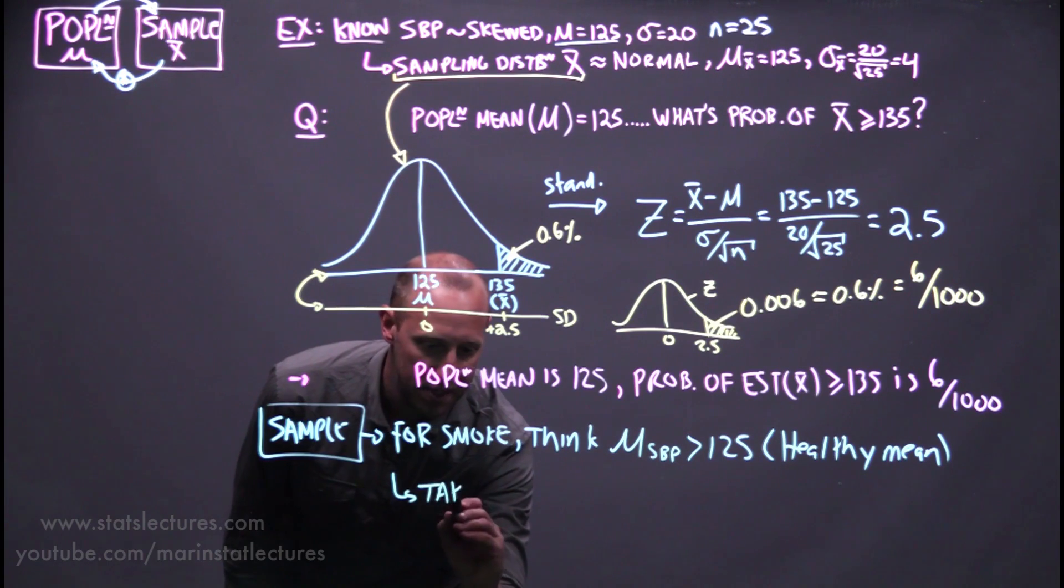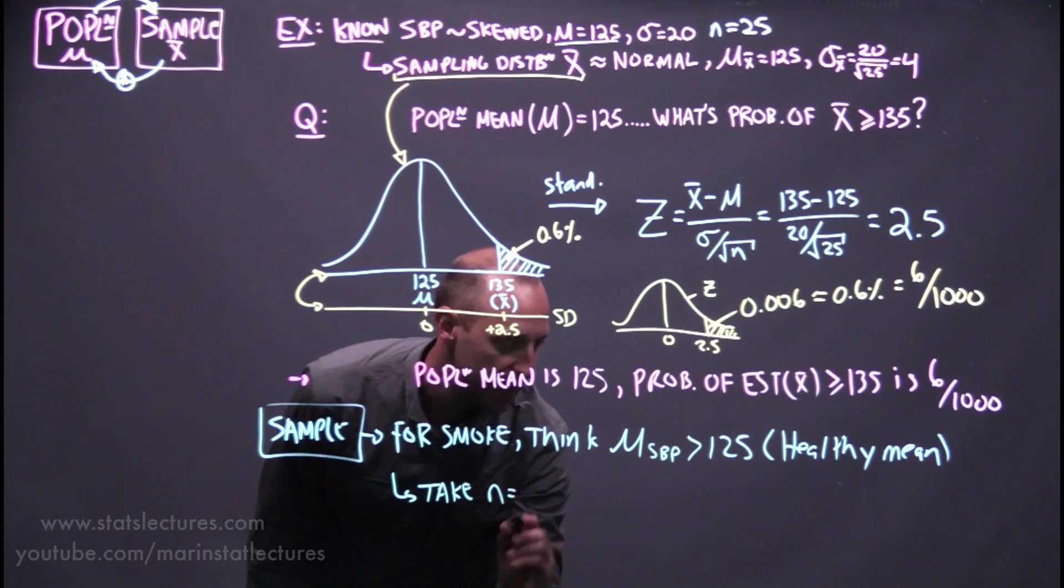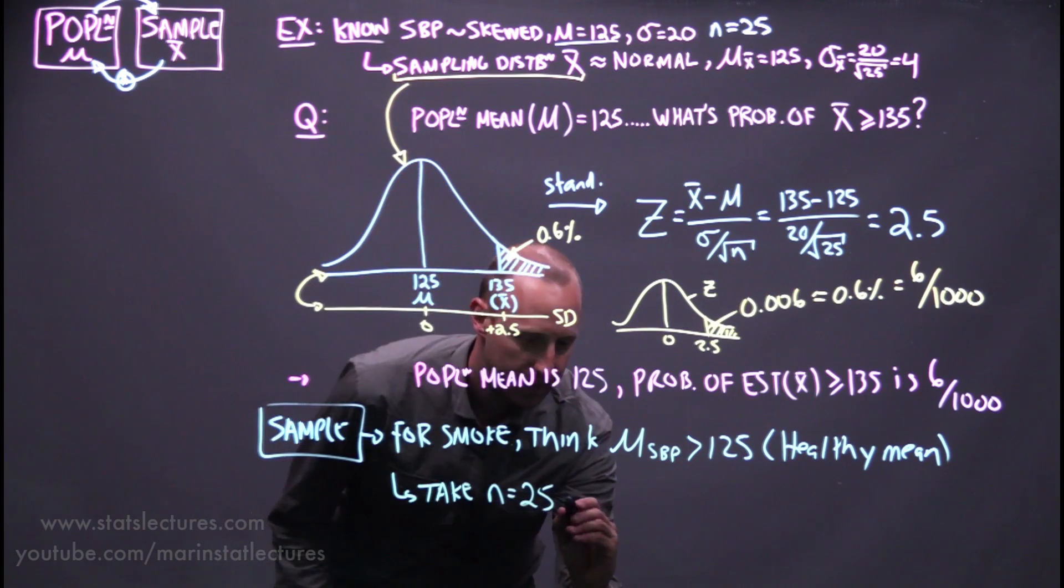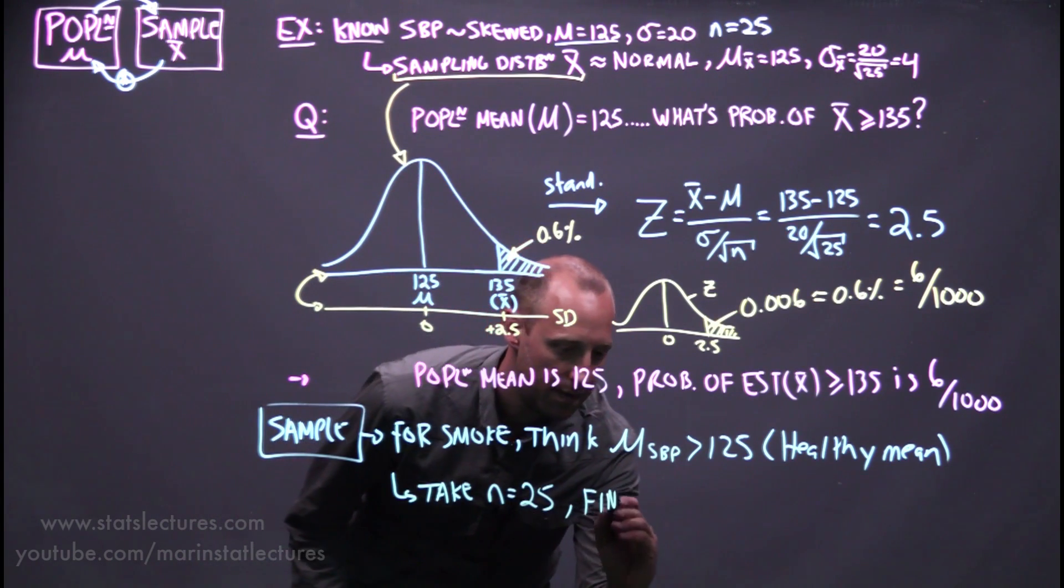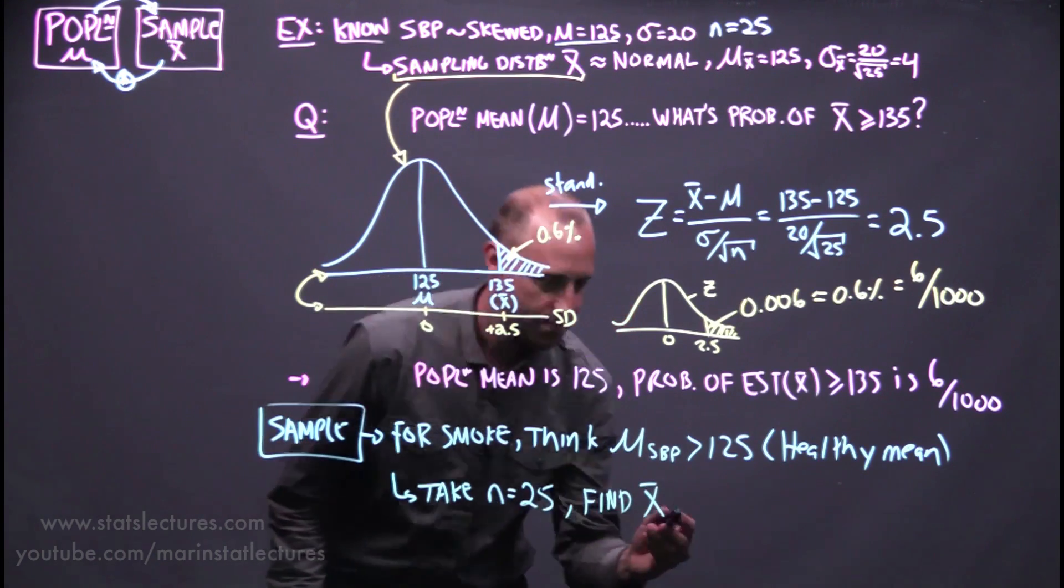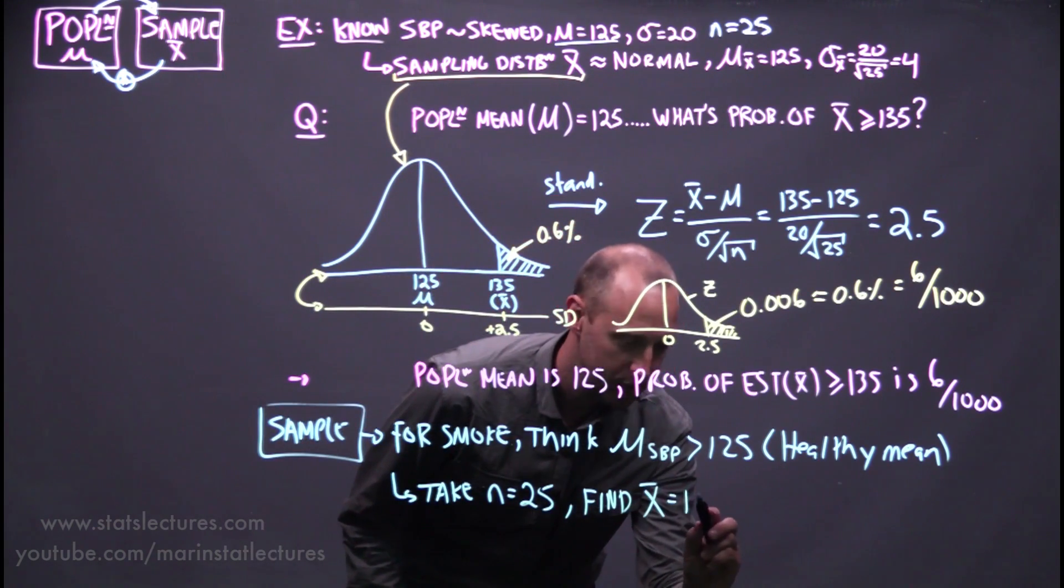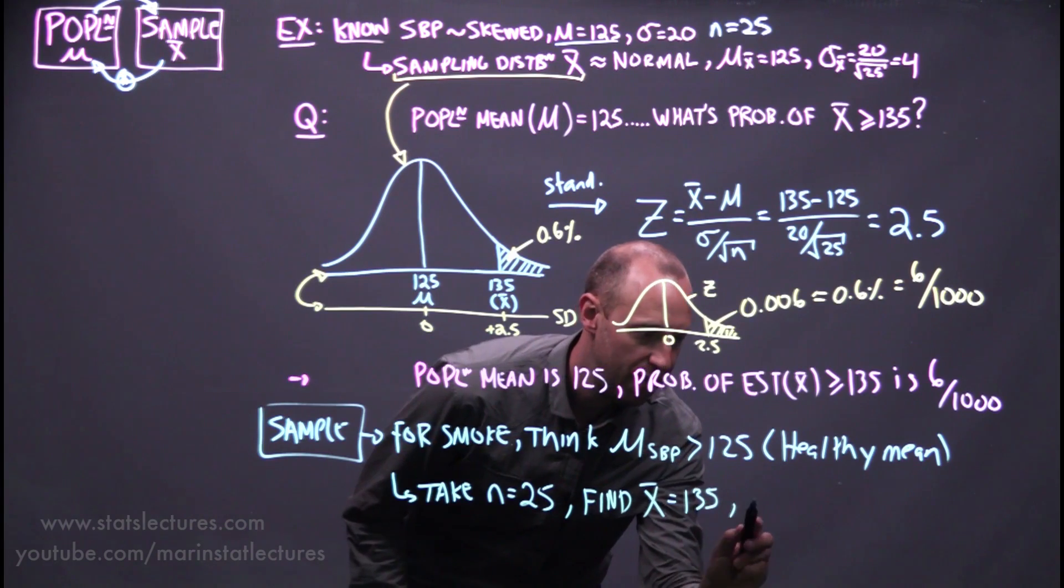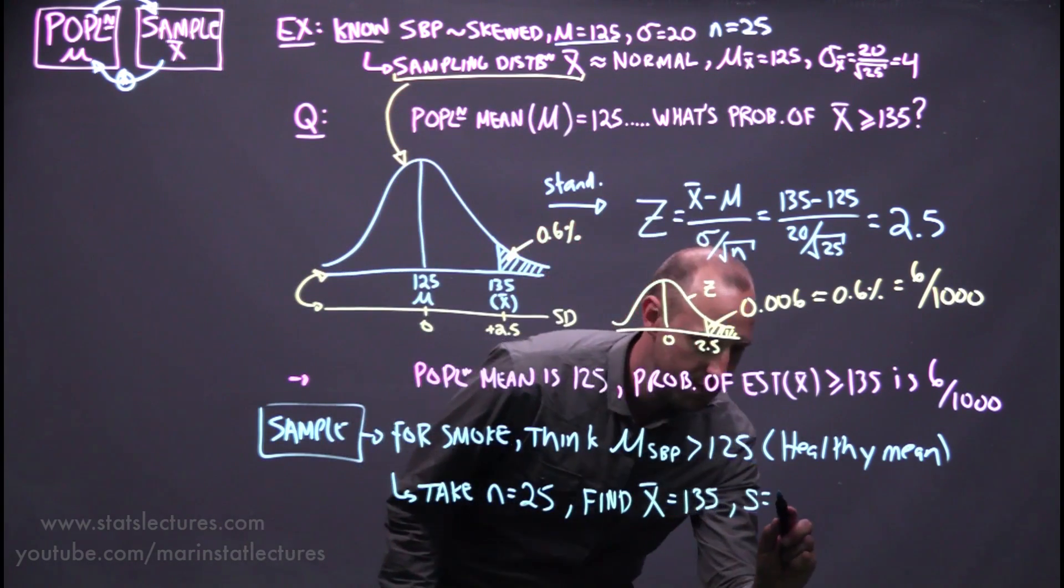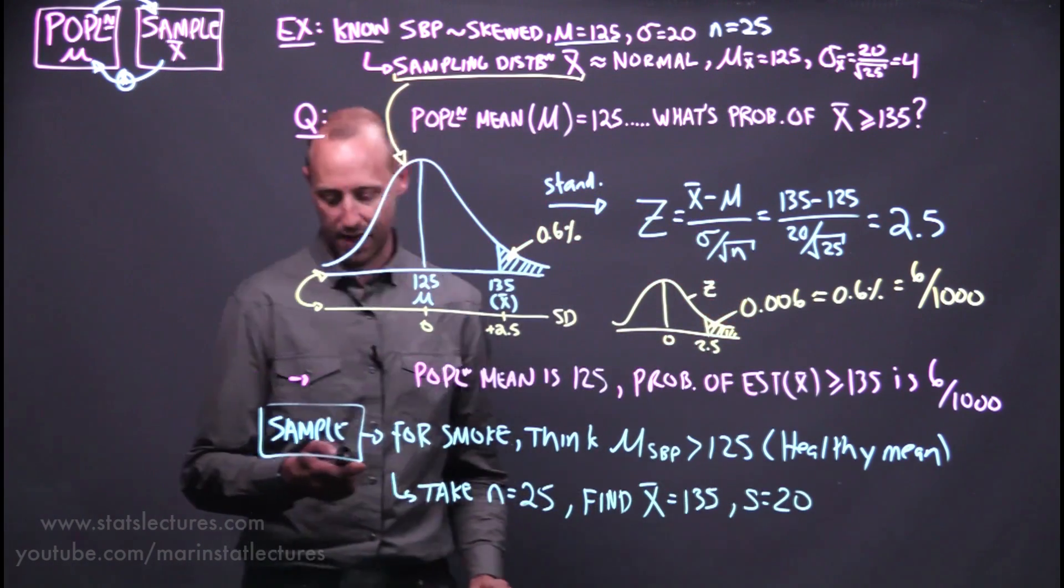So we reach into this population and we take a sample of 25 smokers. And we find the sample mean for these 25 individuals is 135. And let's just suppose now, so we can stay consistent, the sample standard deviation came out to be 20.